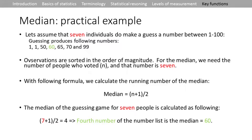For the median calculation, assume seven individuals make a guess between one and 100. The guessing game produces the following numbers: 1, 1, 50, 60, 65, 70, and 99. The observations are sorted in order of magnitude. For the median we need n, the number of people, which is seven.